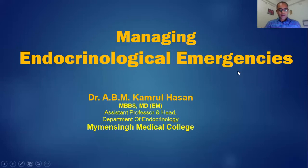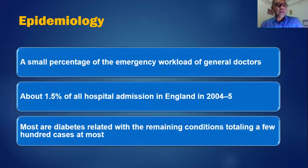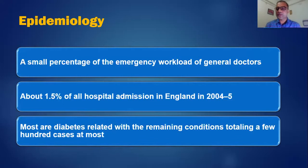Regarding the epidemiology of endocrine emergencies, endocrine emergencies constitute a small percentage of the emergencies handled by doctors worldwide. Around 1.5 percent of all hospital admissions in England in 2004 to 2005 were due to endocrine emergencies, and most of these were due to diabetes-related endocrine emergencies, with the remaining other causes totaling a few hundred cases at most.